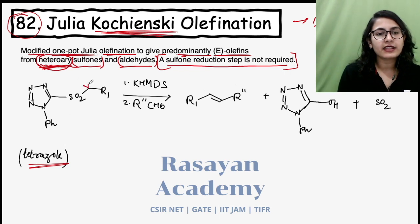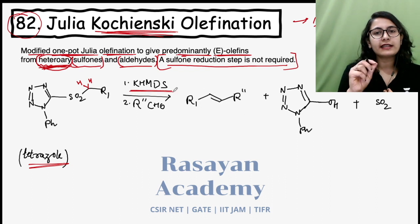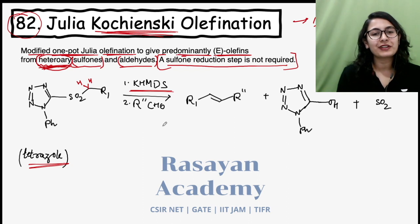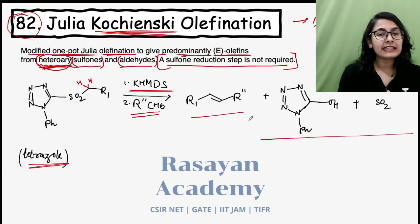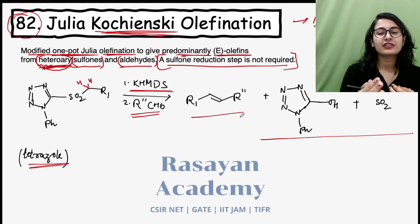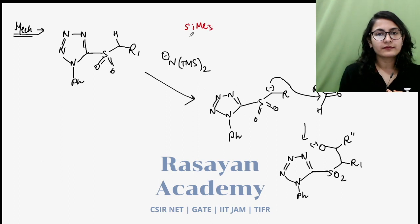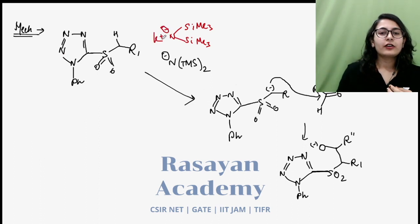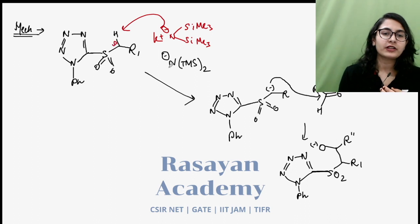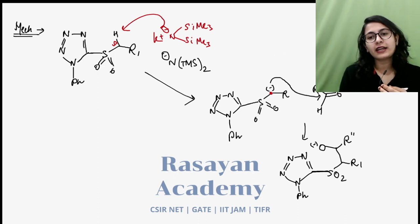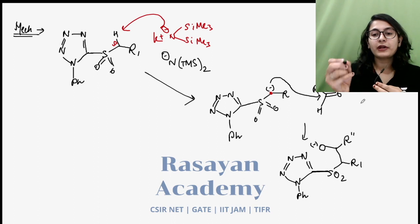You have the same sulfonyl system with two acidic alpha protons. So here you use a less basic base — KHMDS — because the protons are acidic and can be removed easily. KHMDS followed by aldehyde addition gives you exactly the E-alkene, but with no second step required. The carbanion attacks on the aldehyde just as before. But what happens with the O⁻ is different from the Julia-Lythgo reaction, where you used acetic anhydride.